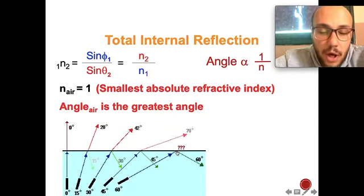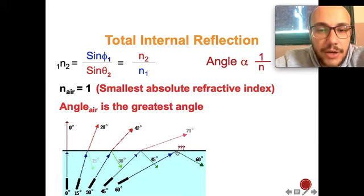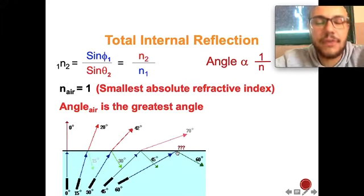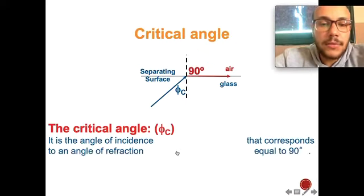Light passes from a medium of higher refractive index to a medium of lower refractive index—in other words, from a medium of low velocity to a medium of high velocity. This is because velocity is inversely proportional to refractive index.